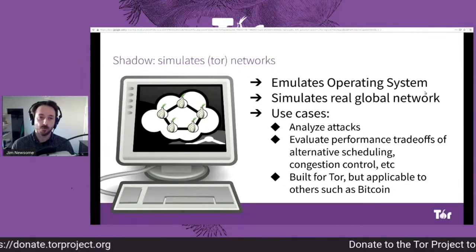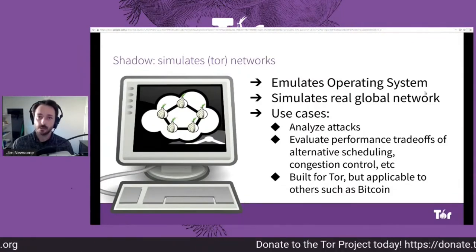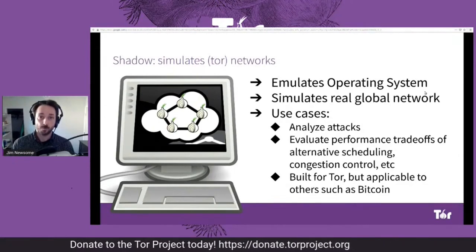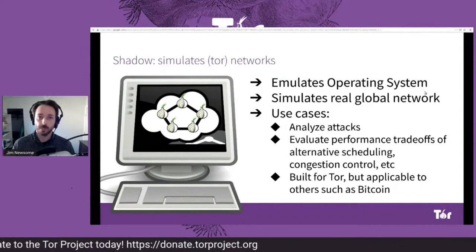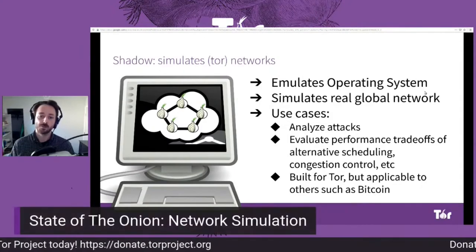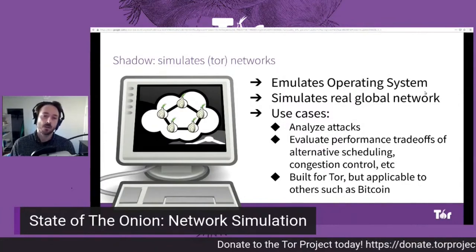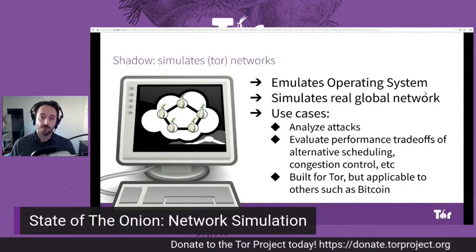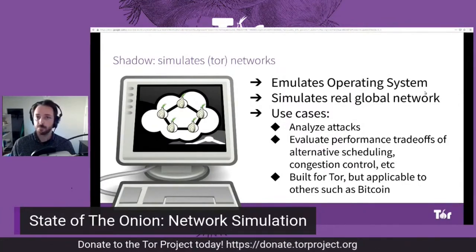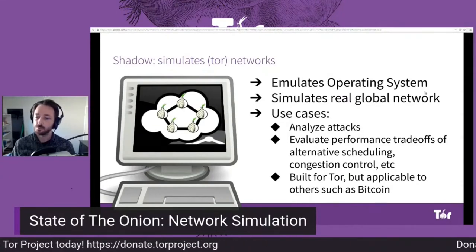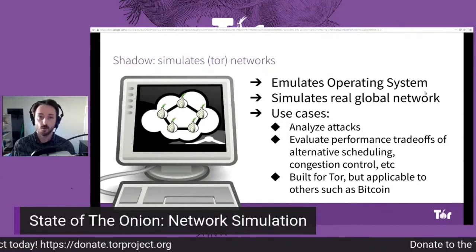This is useful for analyzing attacks against the Tor network and for analyzing performance, especially trade-offs of parameter tuning or alternative algorithms for scheduling or congestion control. While this tool is built with Tor in mind, it's actually applicable to any application network and has been used with Bitcoin in particular.